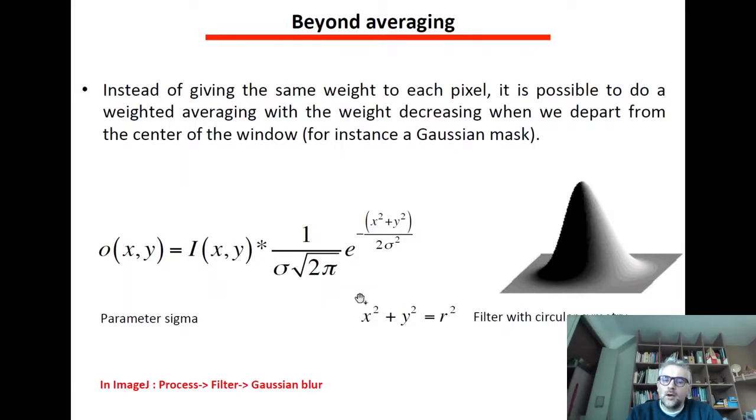So what you can do is decrease the weight of this contribution as you depart from the center of the filter. So one way of decreasing from this center is the Gaussian blur. You are very high when you are close to the central pixel and you decrease along a Gaussian function parameterized by a standard deviation sigma. This is accessible in ImageJ as process filter Gaussian blur.